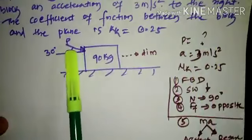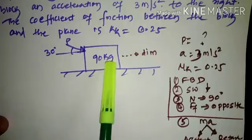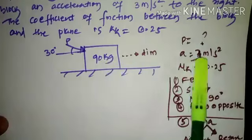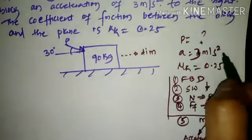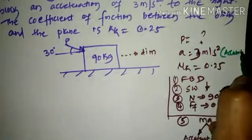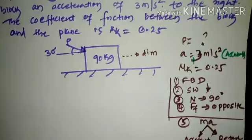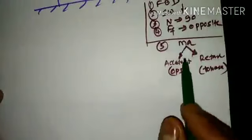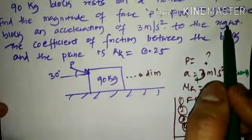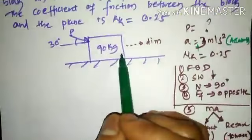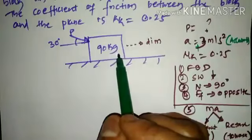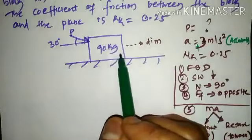Force P is constantly applied on the 90 kg block, inducing an acceleration of 3 m/s². This is a case of acceleration, so we consider it as positive 3. In the case of acceleration, the direction of the inertia force shall be opposite to the movement of the body. Since the body moves towards the right, the inertia force shall be towards the left-hand side.